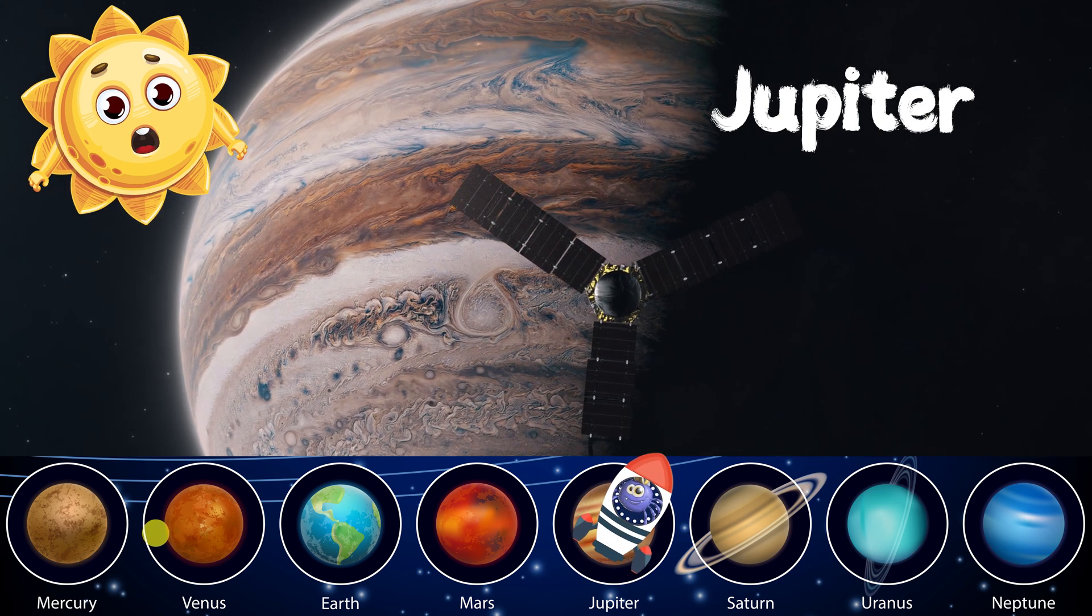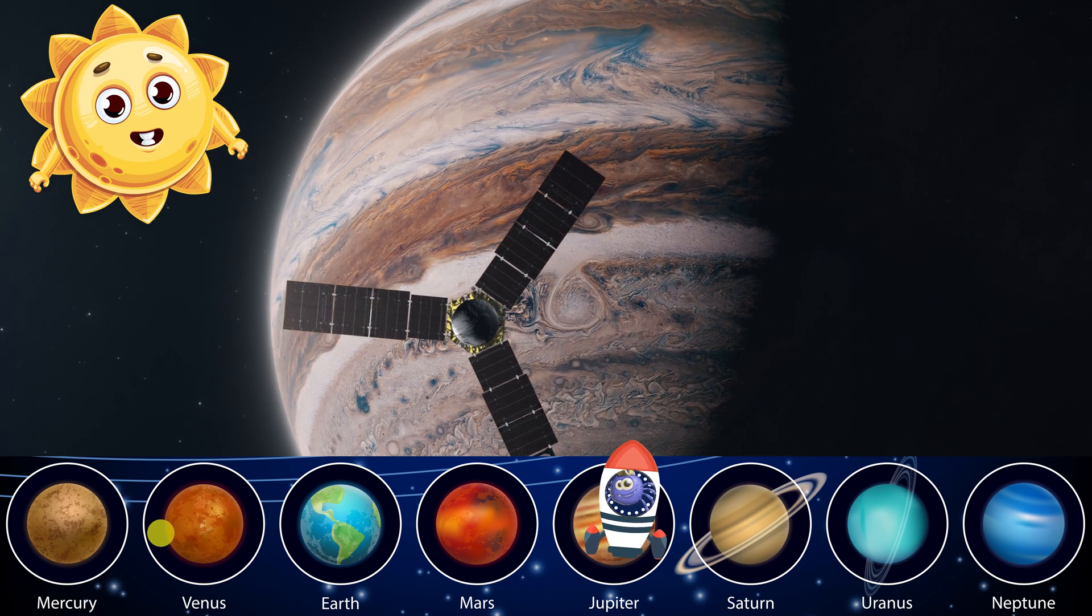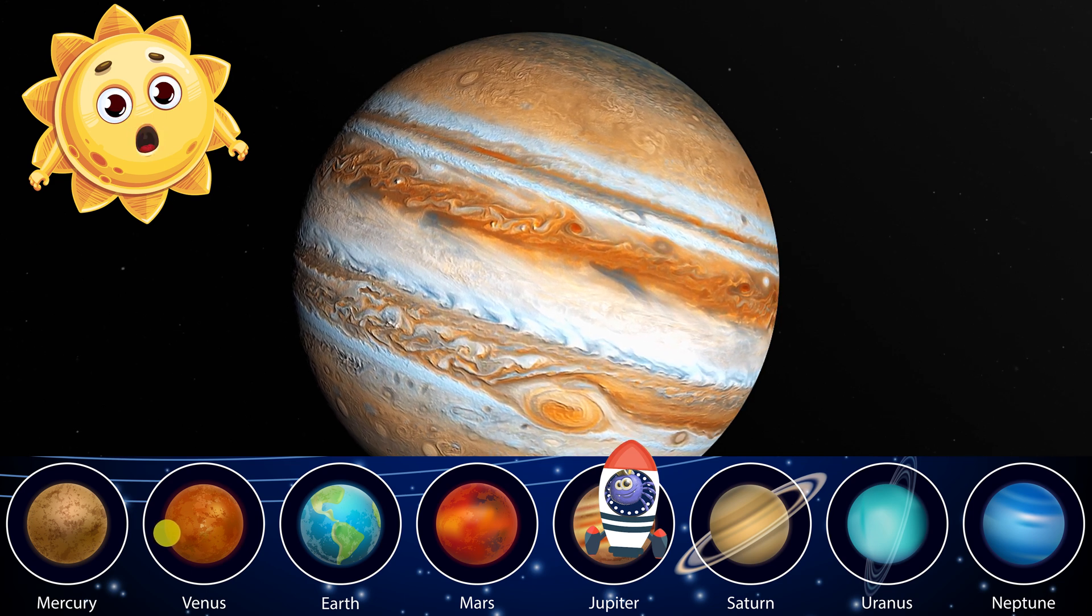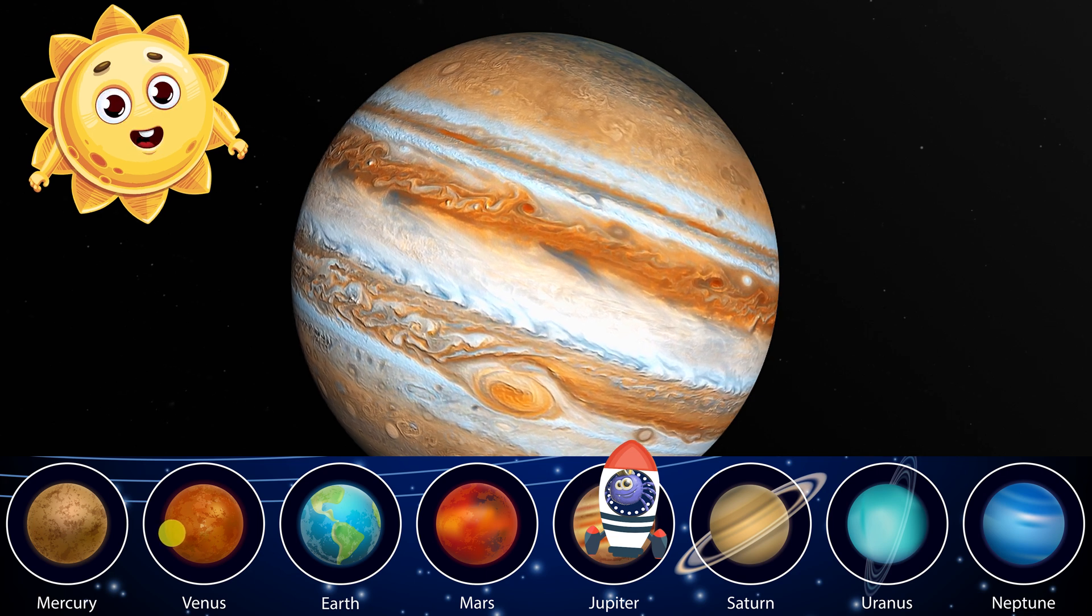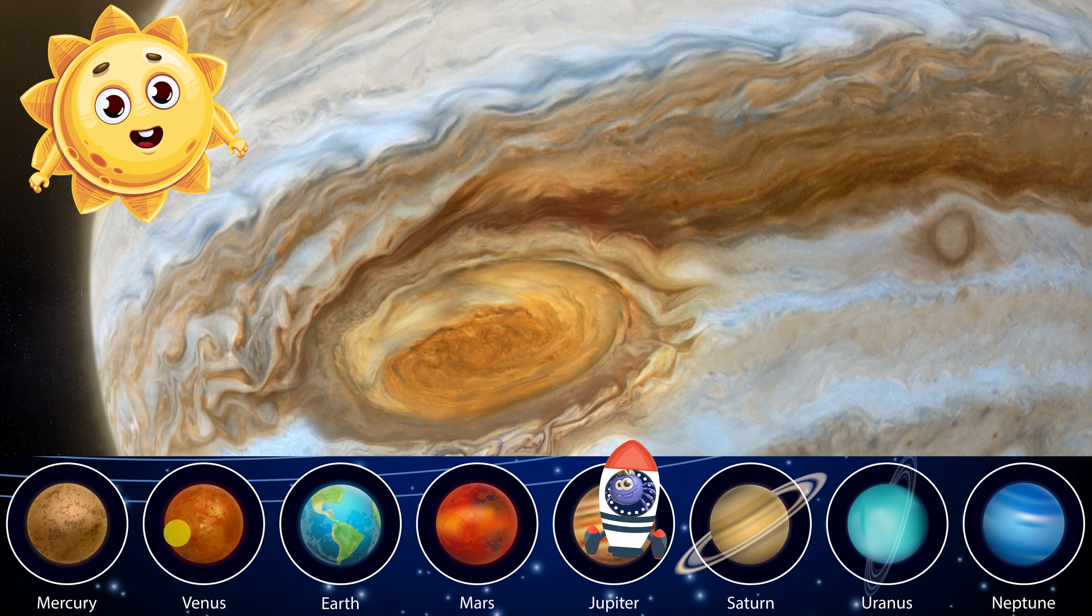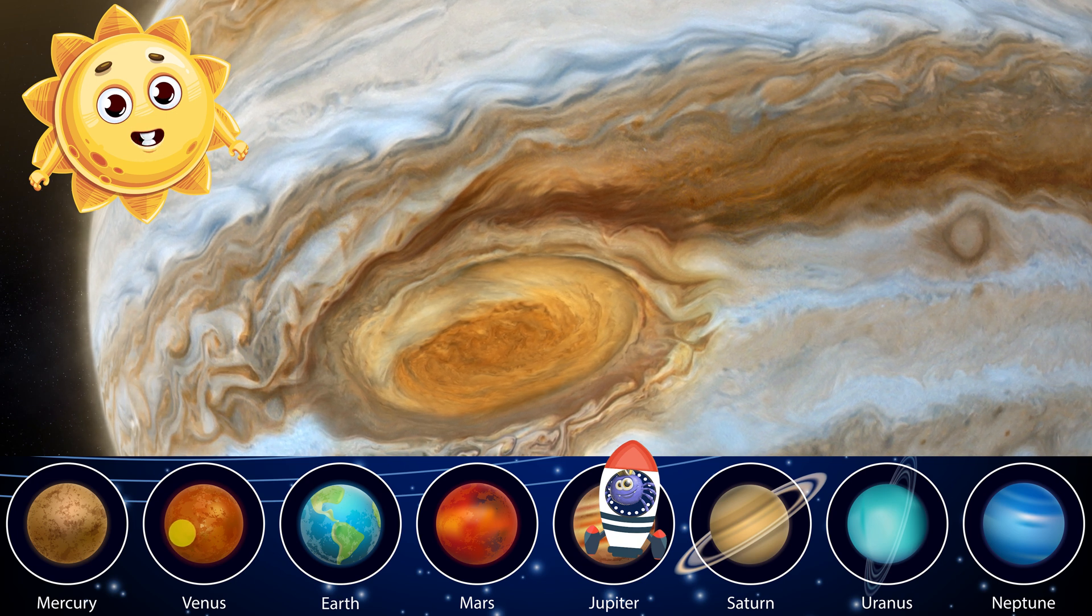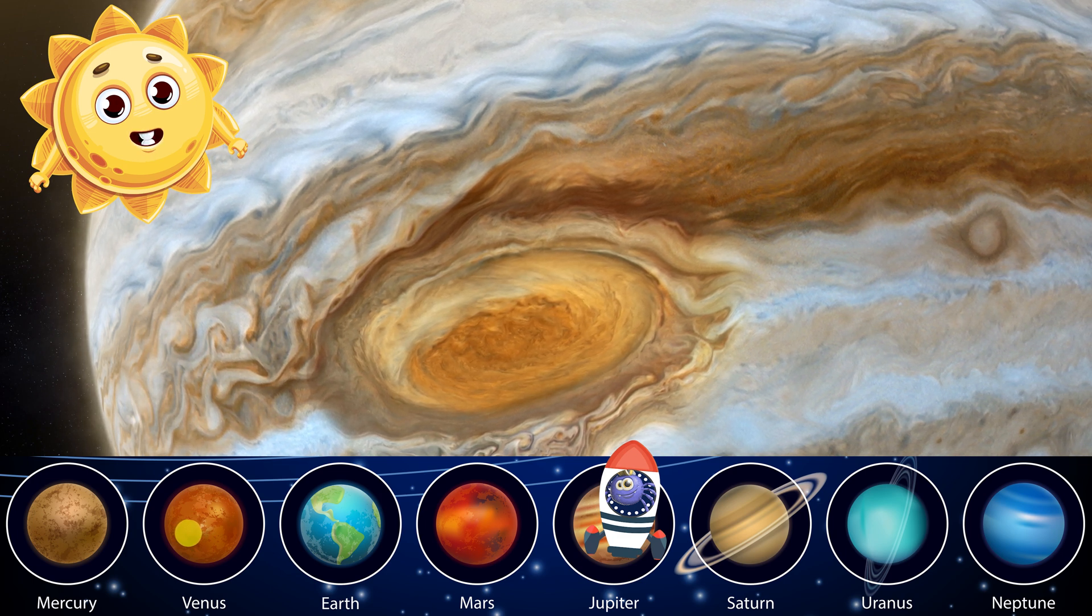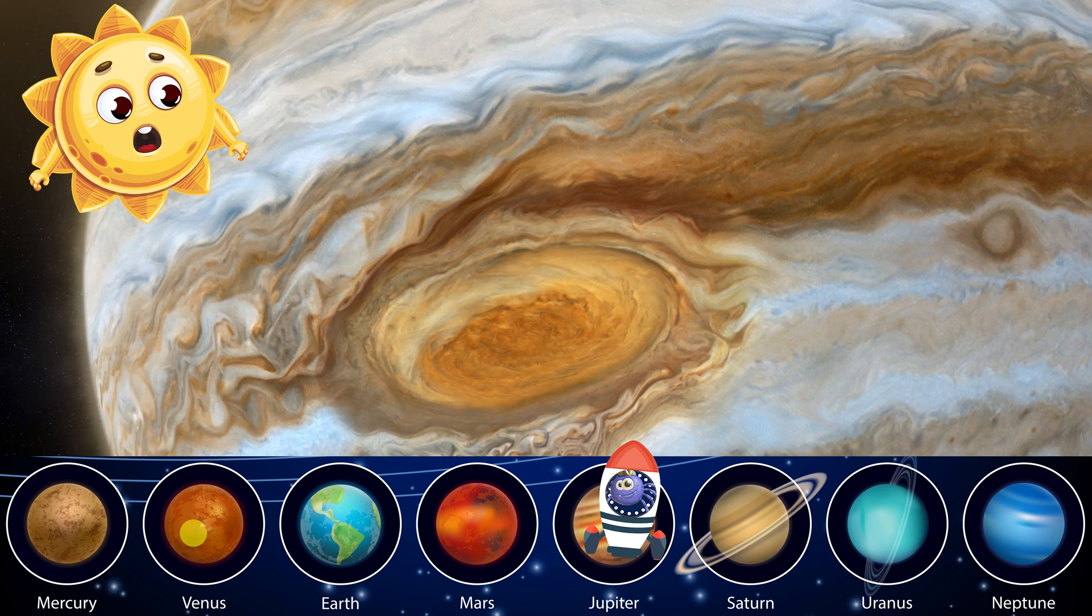Jupiter is the fifth planet from me and the largest one in our solar system. It has a thick atmosphere of hydrogen and helium. This makes it look like a giant ball of gas with colorful bands and storms. It also has a powerful magnetic field that protects it from radiation. Jupiter has at least 79 moons that orbit around it. The four largest are Io, Europa, Ganymede, and Callisto. Jupiter also has a ring system made of dust and debris. Jupiter takes about 12 years to orbit around me and about 10 hours to spin on its axis. Scientists also believe that Jupiter is the oldest planet in our solar system.